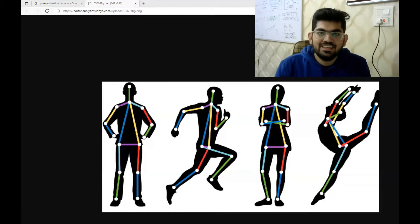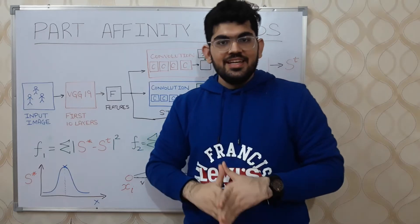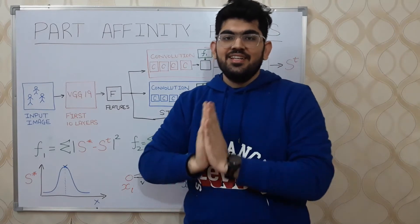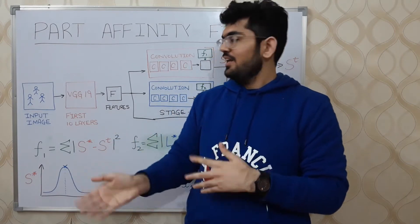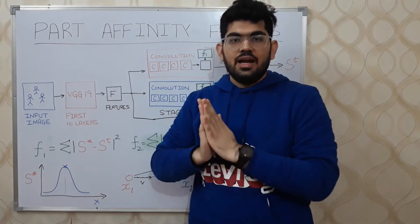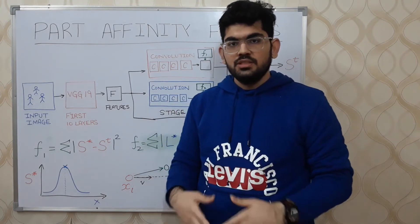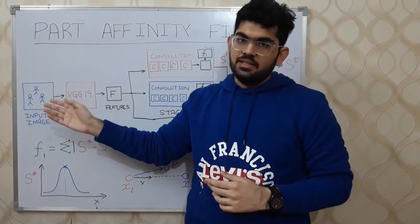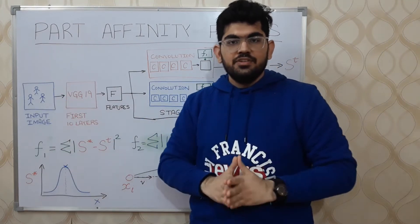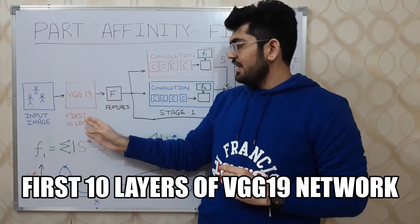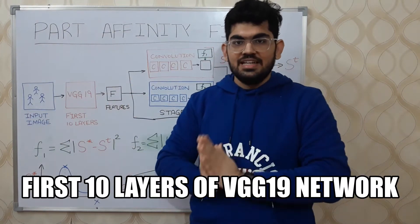Now let us discuss the technical details of the algorithm used for this pose estimation — part affinity fields. In this technique, the first part is the input image. We are given an input image that contains a number of different human beings, and the complete problem is to output skeletal poses on these humans. The first step is to pass this input image through the first 10 layers of the VGG-19 network.